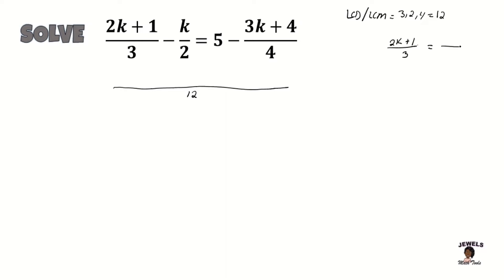When changing this fraction to its equivalent form where 12 is the denominator, I'm looking at my number 3 and looking for the number that when I multiply it to 3, it's going to equal 12. And that number is going to be 4. So 4 times 3 is equal to 12. And remember, whenever changing to your equivalent form, whatever I multiply my denominator by, my numerator is also multiplied by the same number. So I'm going to be multiplying 4 times 2K, which will equal to 8K, and 4 times 1, which will equal to 4.